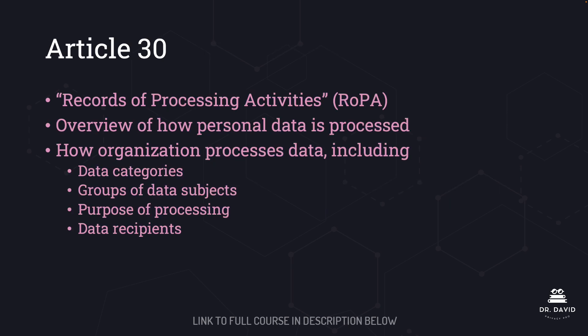Another GDPR article that you need to know about is Article 30, which deals with ROPA — Records of Processing Activities. A ROPA is an overview of how personal data is processed by an organization, and it will include the data categories collected, the groups of data subjects, the purpose of processing, and the data recipients. Article 30 and ROPA comes up throughout the body of knowledge for the CIPM exam, and it may be one you're asked to identify by number, so definitely remember this one.